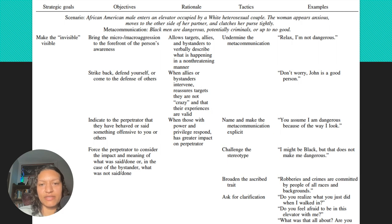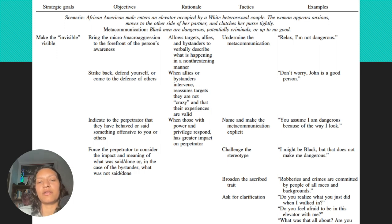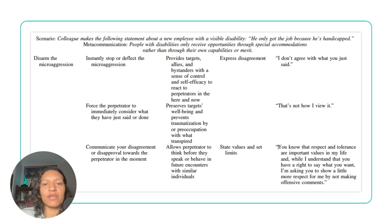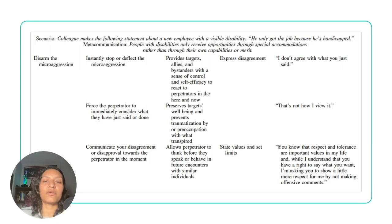Some of the tactics listed include undermining the meta-communication, checking communication, and challenging the stereotype. For example, a clarifying statement might be: 'I might be Black, but that does not make me dangerous.' There are also ways to disarm the microaggression — how to stop or deflect it, communicate your disagreement or disapproval.